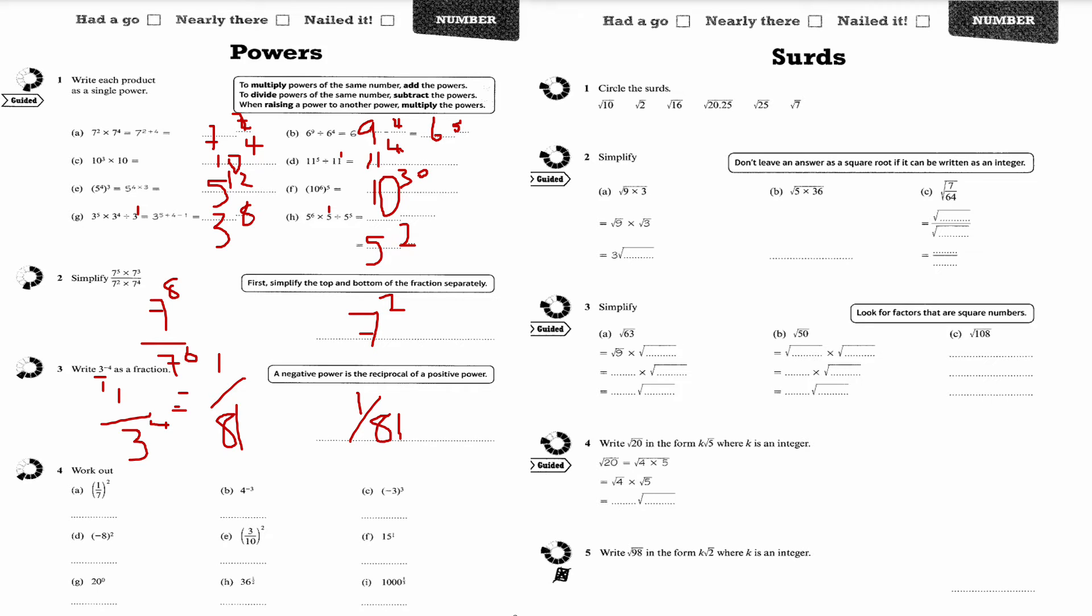Question number 4. It's 7 to the minus 2, that is 1 over 49. 1 squared is 1 and 7 squared is 49. That's going to be 1 over 4 cubed, which is 1 over 64.